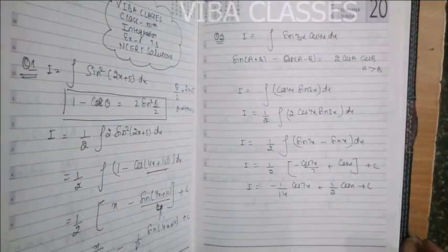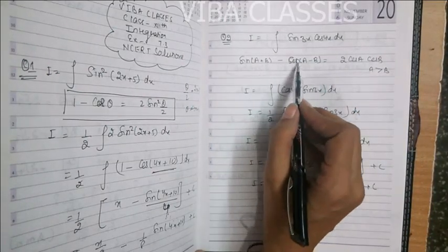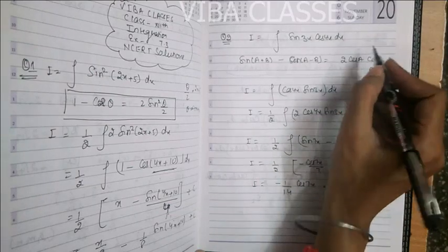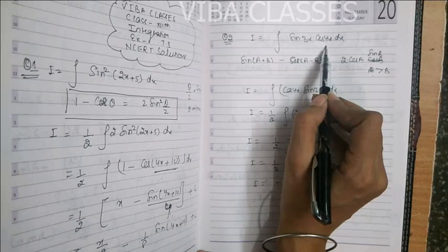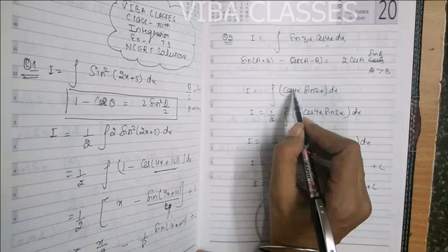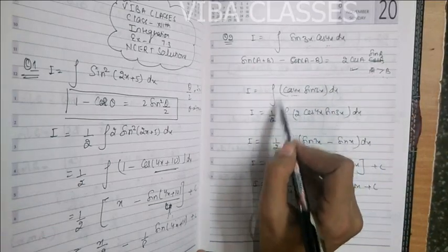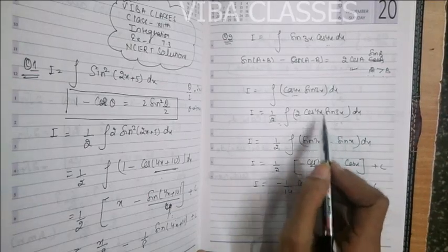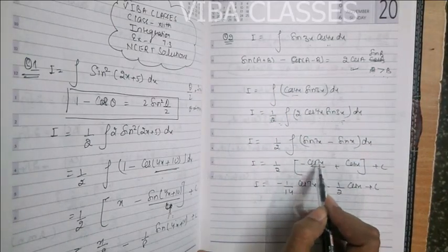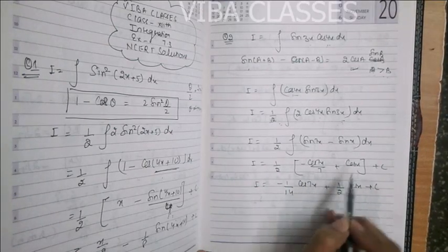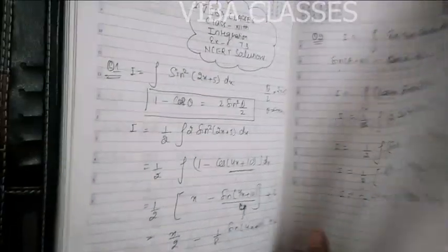Question number 2 में आपके पास है sin(3x)cos(4x) — आपने इसका integration लेना है. अगर आपको class 11 के formula याद हैं: sin(a+b) minus sin(a-b) = 2 cos(a) sin(b), where a should be greater than b. तो cos(4x) को आगे लिखा, sin(3x) को नीचे. 2 से multiply और divide करा. This has become: sin(a+b) = sin(7x), sin(a-b) = sin(x). sin(7x) का integration = -cos(7x)/7, sin(x) का integration = cos(x). 1/2 को अंदर multiply कर दें — you get your answer.